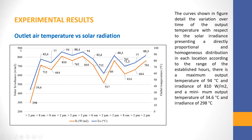Outlet air temperature versus solar radiation. The curves shown in the figure detail the variation over time of the output temperature with respect to solar irradiation, presenting a directly proportional and homogeneous distribution in each location according to the range of the established hour.